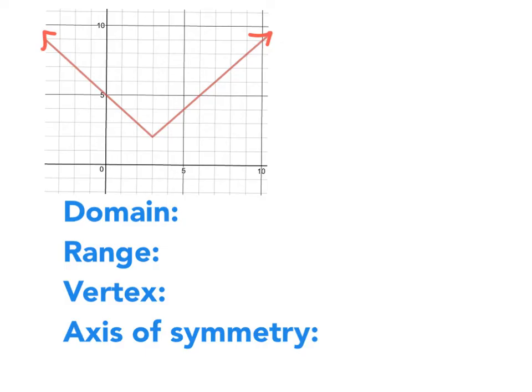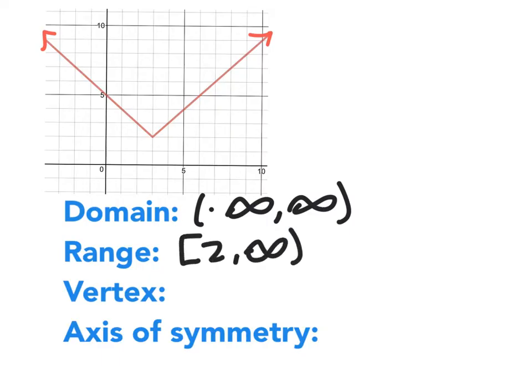All right, so let's actually try to do that for the graph that we were just looking at. Its domain is going to be negative infinity to infinity because it goes forever left and right. We can see from the graph that the range is from 2 to infinity. All right, the vertex, which is right here, this is at the point (3, 2). So the vertex is (3, 2).